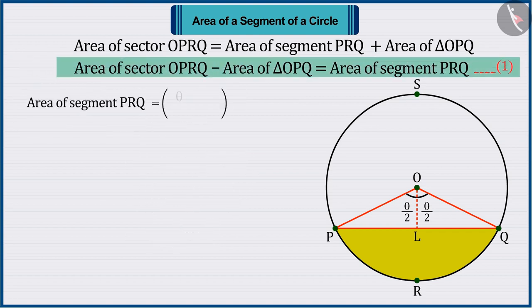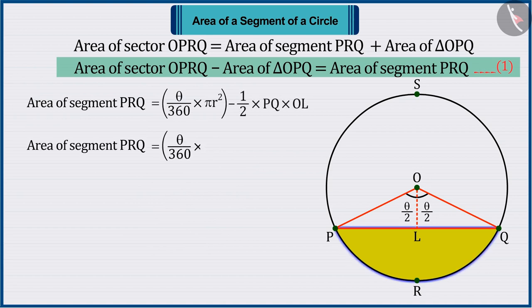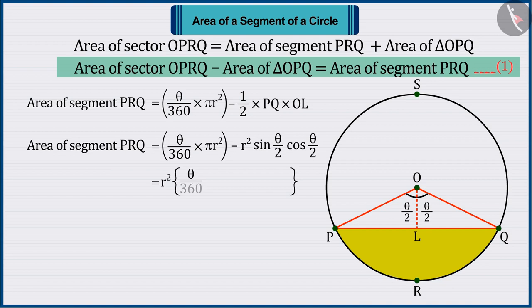By placing the above values in equation 1, the shaded part area of segment PRQ is R square multiplied by theta upon 360 times pi minus sin theta upon 2 into cos theta upon 2.